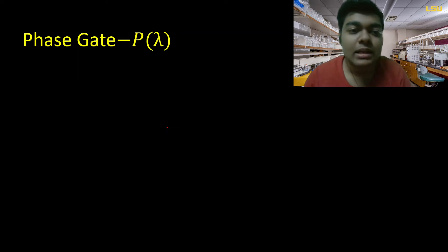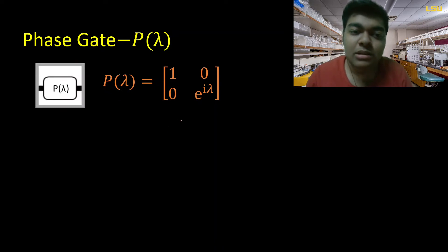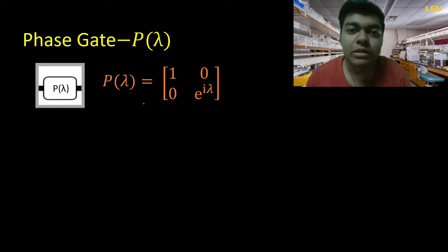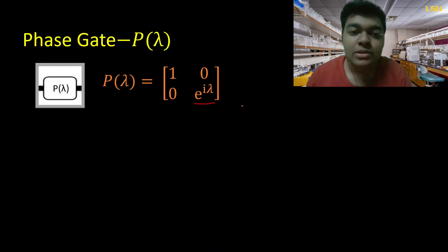Here we are denoting it with P(λ), but it is sometimes also denoted with R(φ). Talking about the matrix, this is the matrix that represents the phase gate, and this is a very special matrix. Previously, all the matrices representing our gates had constant entries, whether real or complex, but here one entry has a variable — λ — which makes this one a little more special.